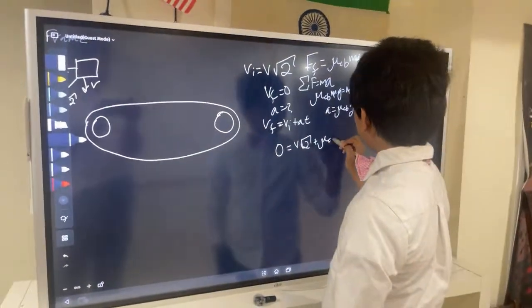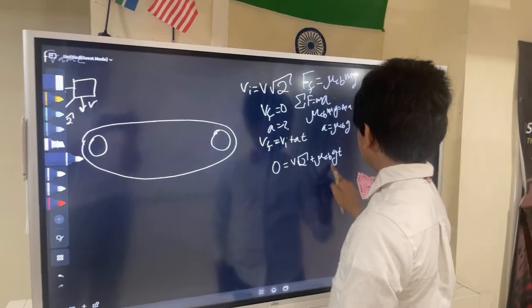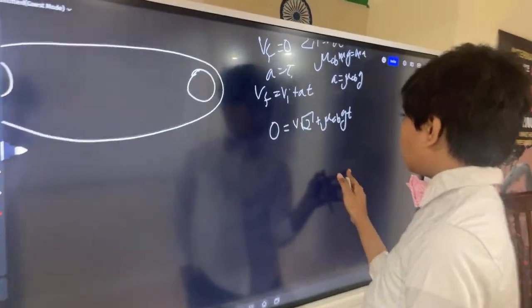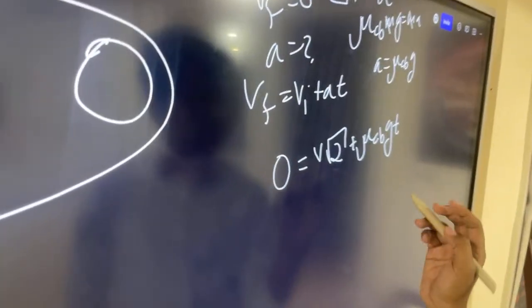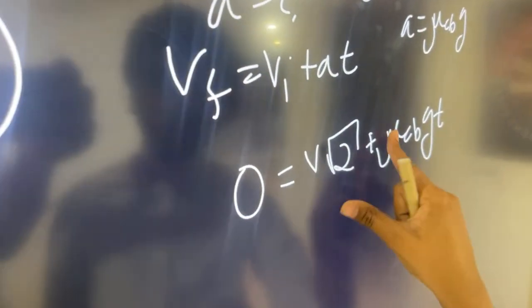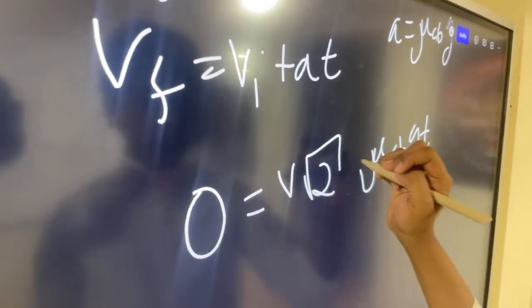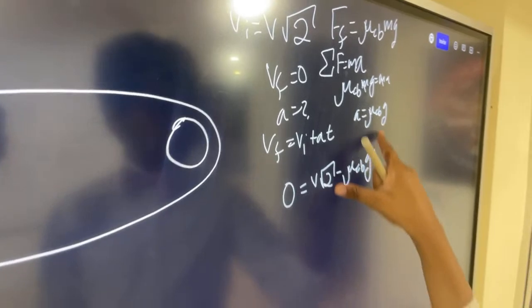so, plus mu Cb, G, T. It's not Cb, T. Okay, so, now we can just find the time really easily, because we get... Oh, yeah, and I forgot the friction force. It's going to be a big minus, because it's decelerating.